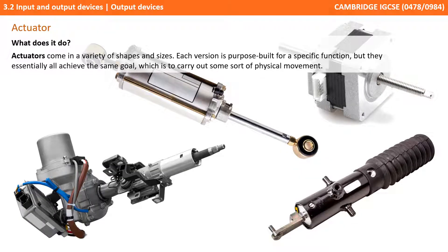So let's start with actuators. Although you no longer need to understand physically how each output device works, we will provide a brief description at the start of each output device so you can understand and have some context. Actuators come in a variety of shapes and sizes. Each version is purpose-built for a specific function, but they essentially all achieve the same goal, which is to carry out some sort of physical movement.